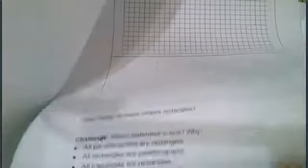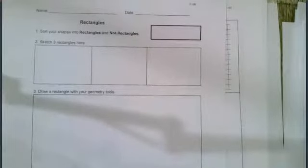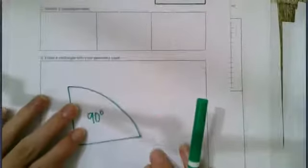You will draw a rectangle on the grid paper as well as the dot paper and then you'll answer the challenge questions at the bottom. So let me show you how you are going to use your right angle template to create your rectangle.